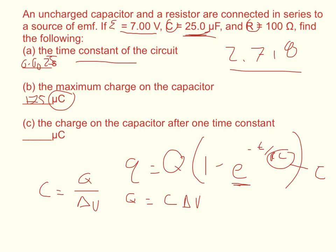To find the charge on the capacitor after one time constant, you could plug in 0.0025 seconds into t. But it would actually make this a negative 1. That whole term would change to negative 1.